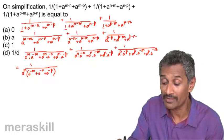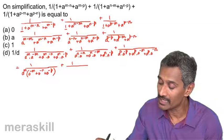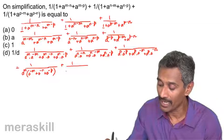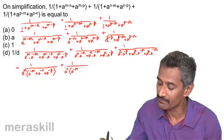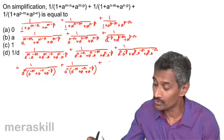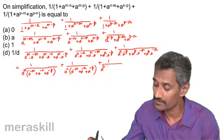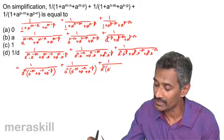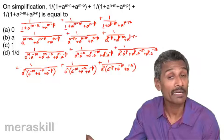So this was the reason why we wrote it as m minus m. In the same way, here we can take a raised to n as a common factor and get a raised to minus m plus a raised to minus n plus a raised to minus p. And in the last one, we take a raised to p as a common factor and get a raised to minus p plus a raised to minus m plus a raised to minus n.